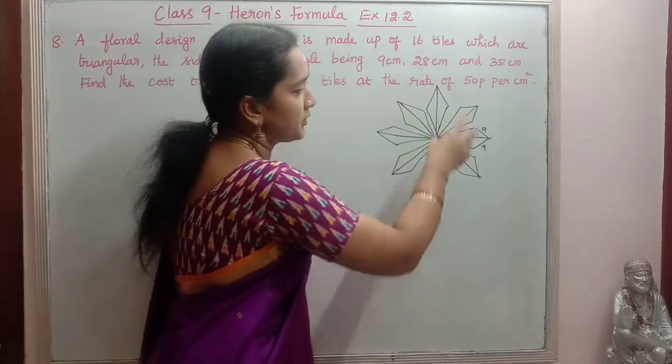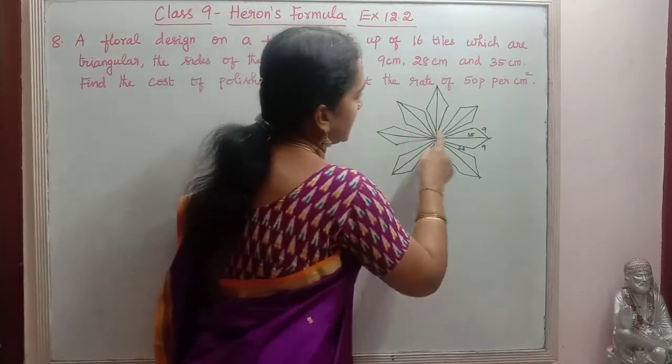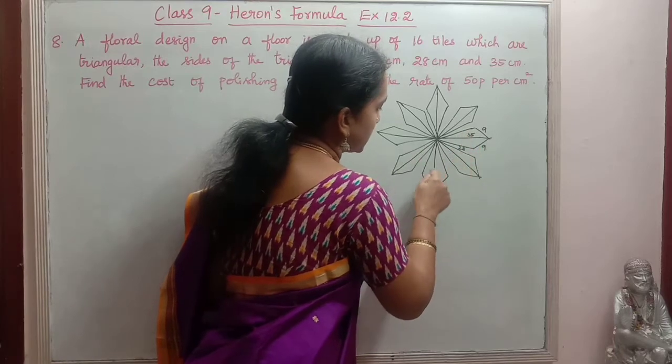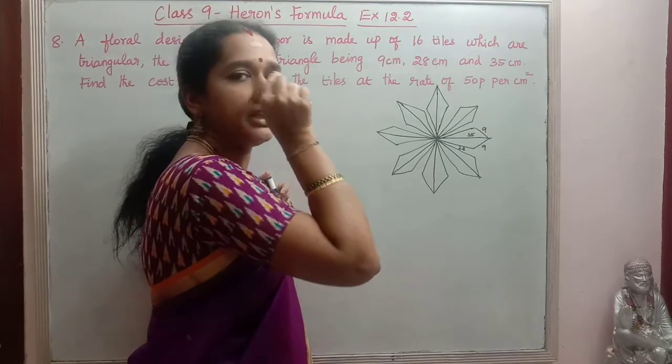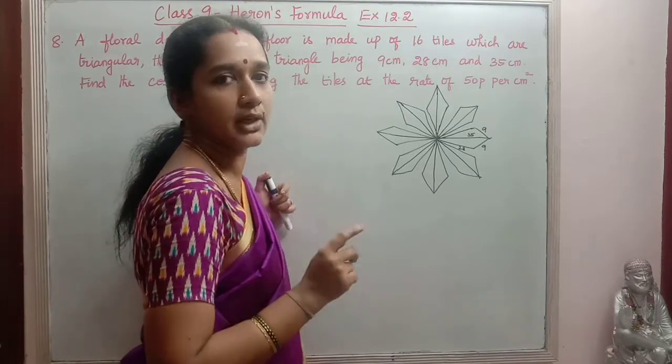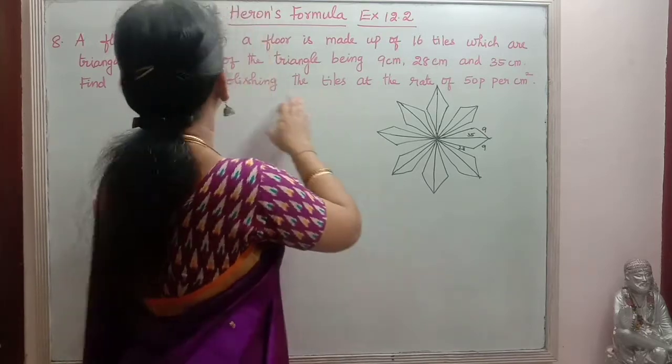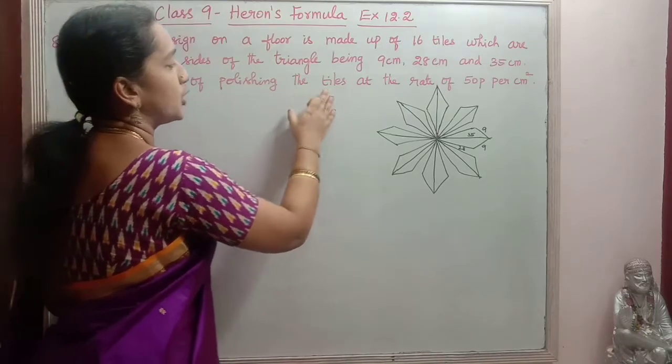So it is made up of 16 tiles. So if we see this, here 2, 4, 6, 8, 10, 12, 14, 16. So 16 tiles are there. So each one is triangular in shape. So we are asked to find the cost of polishing the tile.